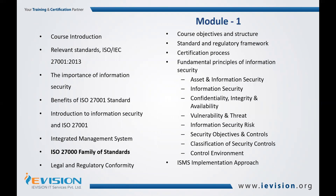We will cover ISO 27000, which is the vocabulary of ISMS — Information Security Management System. ISO 27001, that is the requirement for organizations to fulfill. ISO 27002, the best practices for implementing information security controls, as well as ISO 19011, the guideline for auditing management standards.